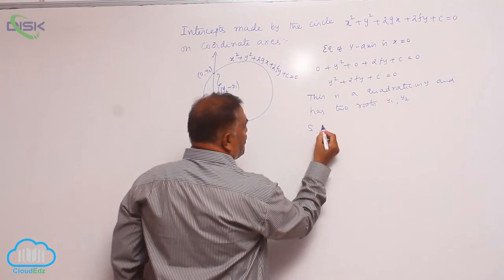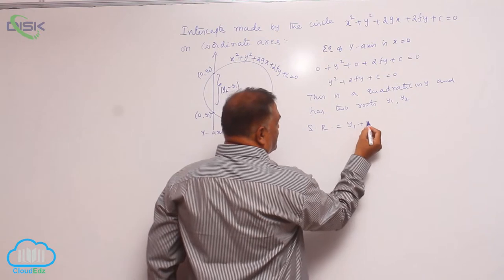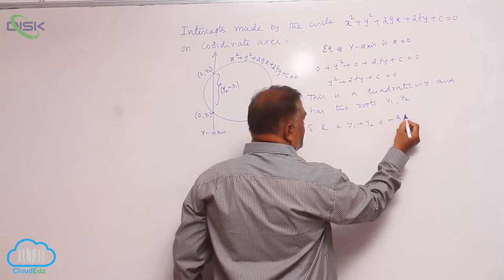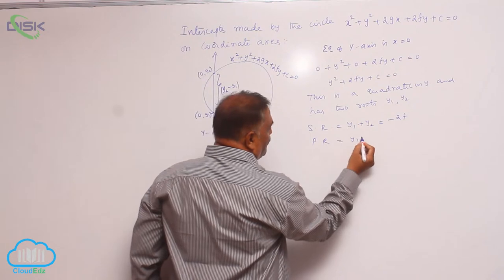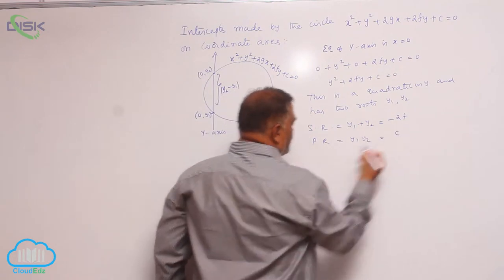So sum of the roots is equal to y₁ plus y₂, that is minus 2f. Product of the roots is equal to y₁y₂, that is equal to c.